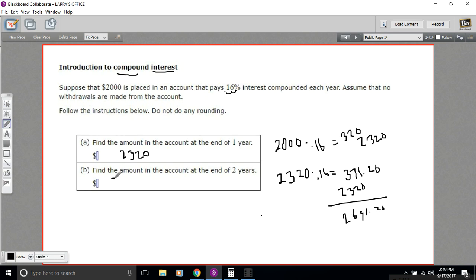$2691.20. So you can see the money is growing pretty quickly, even after only two years with this compound interest.